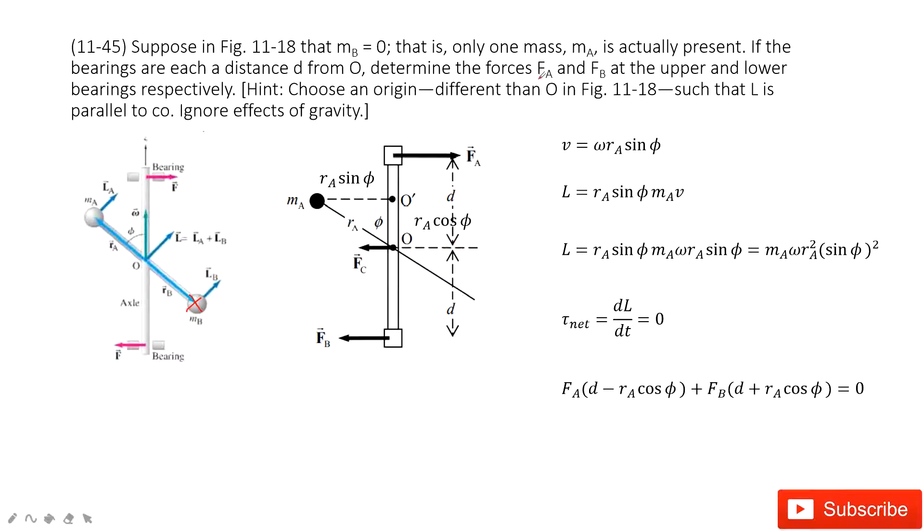We need to determine the forces FA and FB at the upper and lower bearings. Now we need to choose the origin different from O to do the calculation. So this time we select O at this part.